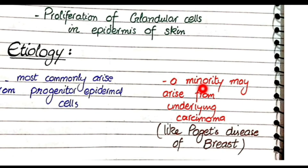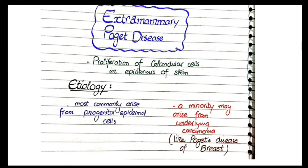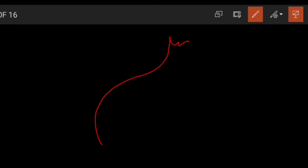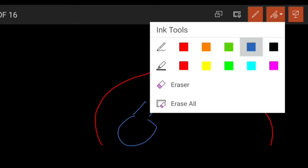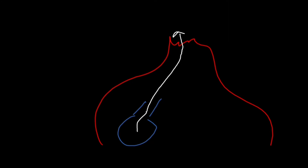In a minority of cases, Paget's disease of the vulva may arise from an underlying carcinoma, similar to Paget's disease of the breast. In breast pathology, the terminal ducts and lobules can undergo neoplasia and form ductal carcinoma in situ. Sometimes, cells of ductal carcinoma in situ migrate along the ducts and enter the skin of the nipple — when they do, these malignant glandular cells are known as Paget's disease of the breast, which is always a manifestation of underlying carcinoma.